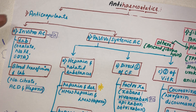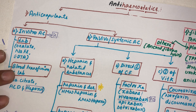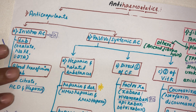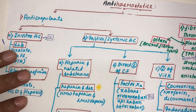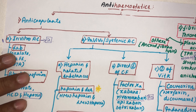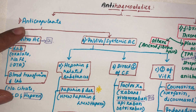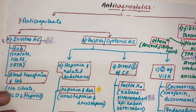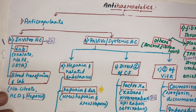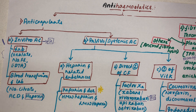In this particular video we are going to study only about anti-coagulants. In the next video we will study the other two classes. Anti-haemostatic is a broader term; anti-coagulant is a group of drugs that comes under anti-haemostatic, so don't confuse between both these terms.